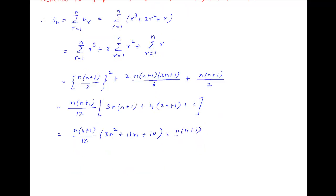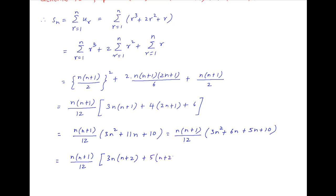This can be written as n(n+1)/12 multiplied by, in brackets, 3n² + 6n + 5n + 10, which is equal to n(n+1)/12 multiplied by [3n(n+2) + 5(n+2)]. Therefore S_n is equal to n(n+1)(n+2)(3n+5)/12. And this is the required answer.